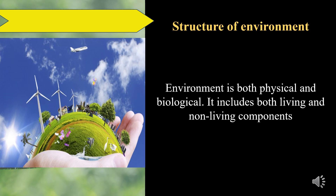The environment is constituted by the interacting system of physical, biological, and cultural elements, interrelated in various ways individually as well as collectively. Physical elements include landforms, water bodies, climate, soils, rocks, and minerals — they determine the variable character of human habitat, its opportunities as well as limitations. Biological elements such as plants, animals, microorganisms, and humans constitute the biosphere. Cultural elements such as economic, social, and political elements are essentially man-made features which define cultural values.